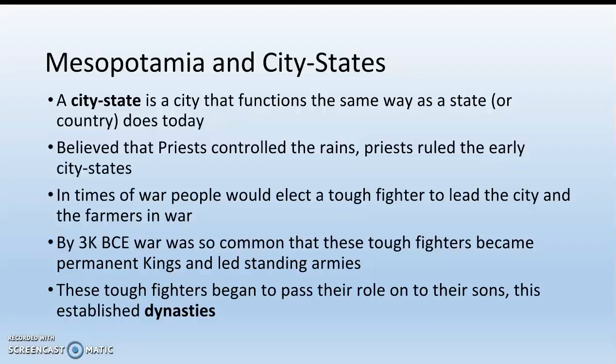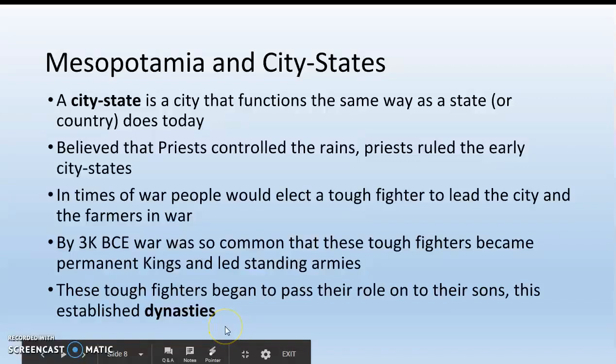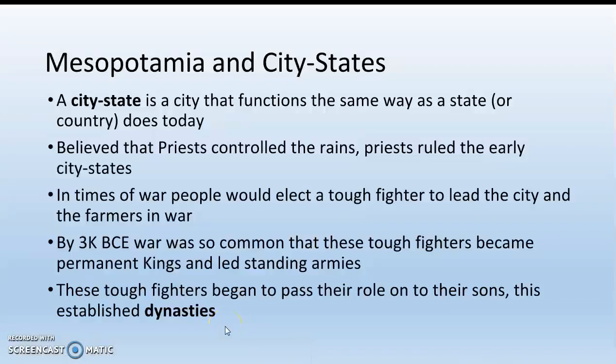These tough fighters — these new kings — begin to pass their role as king onto their eldest sons, and this establishes what are called dynasties, the very first dynasties. A dynasty is when you have people passing political power down to their children. The eldest son becomes the next king, and his eldest son becomes the next king. If there are no sons, the eldest daughter becomes the next queen. Dynasty is probably the most important vocabulary term in Unit 1, because dynasties in the form of monarchies will be the go-to political system for most of the world throughout most of human history.